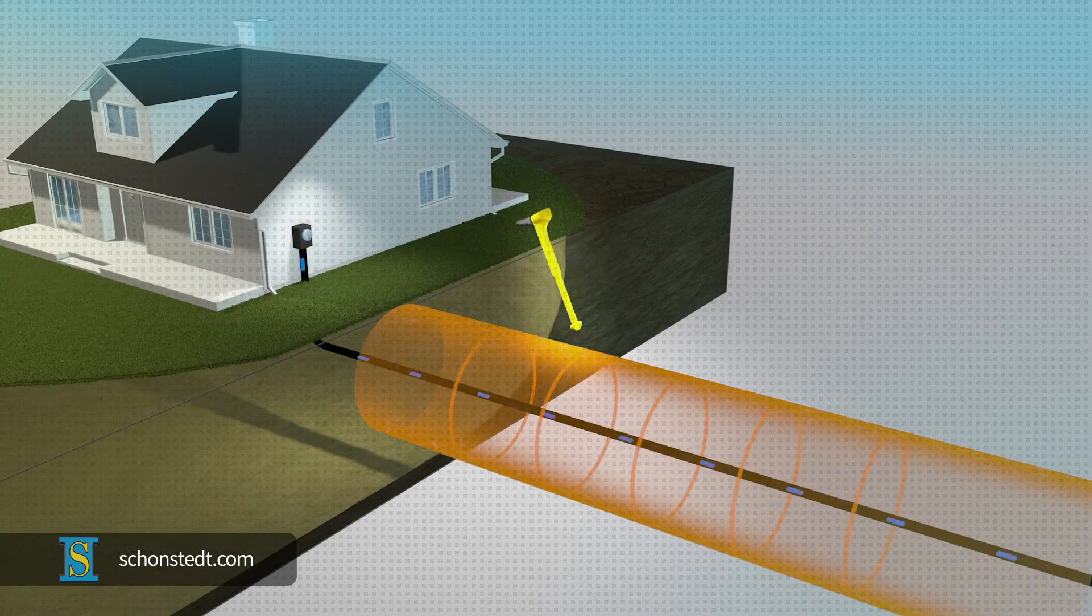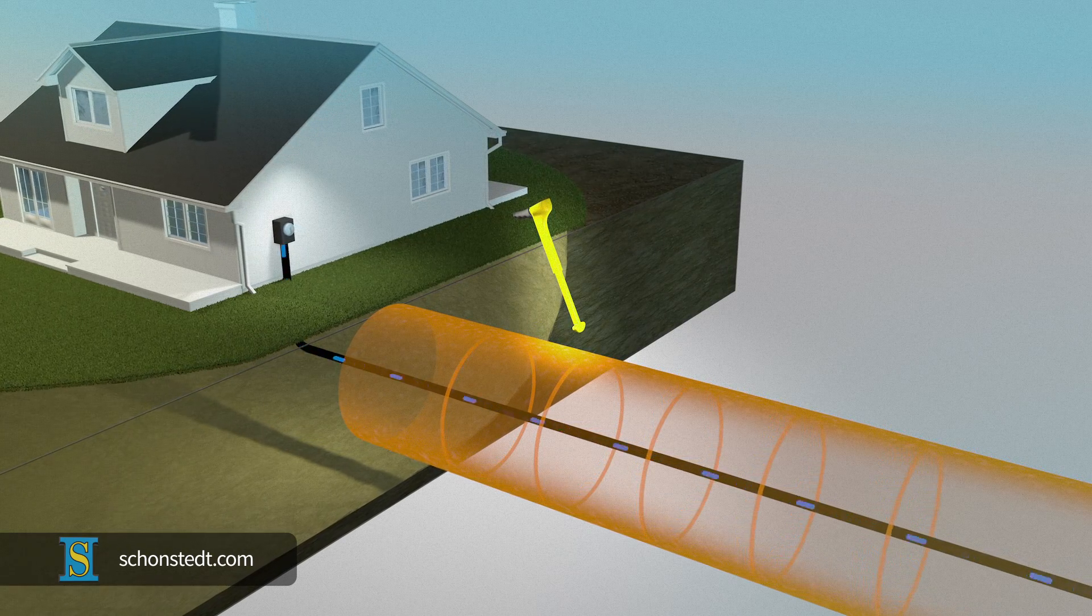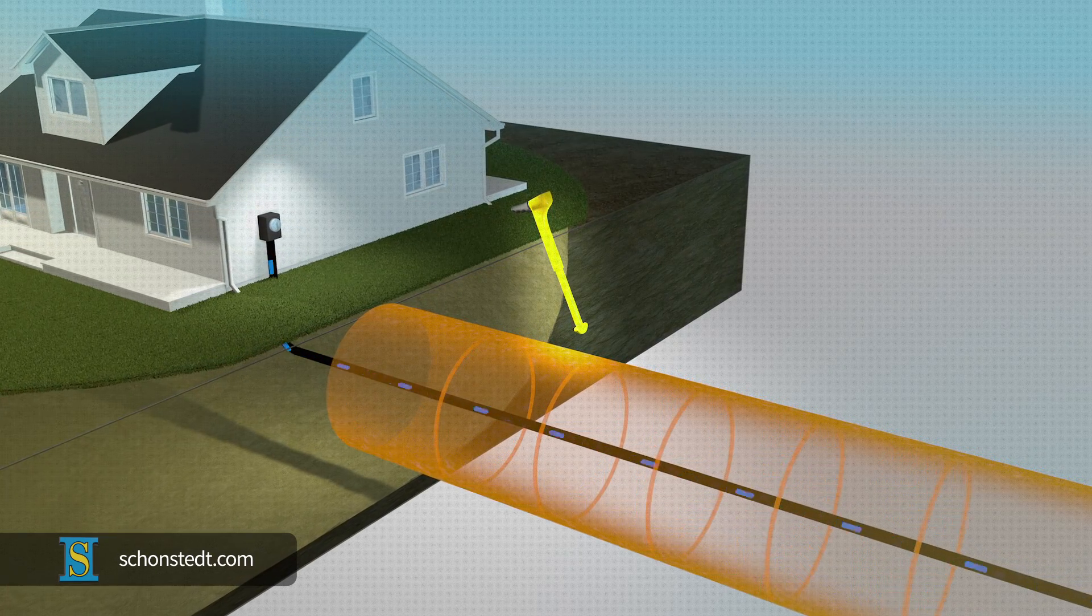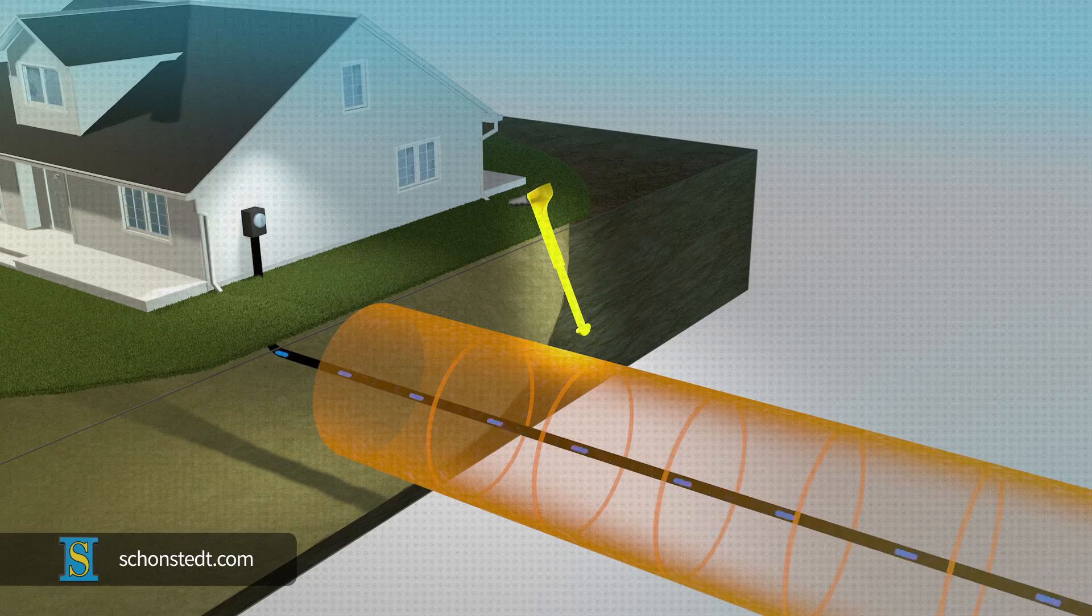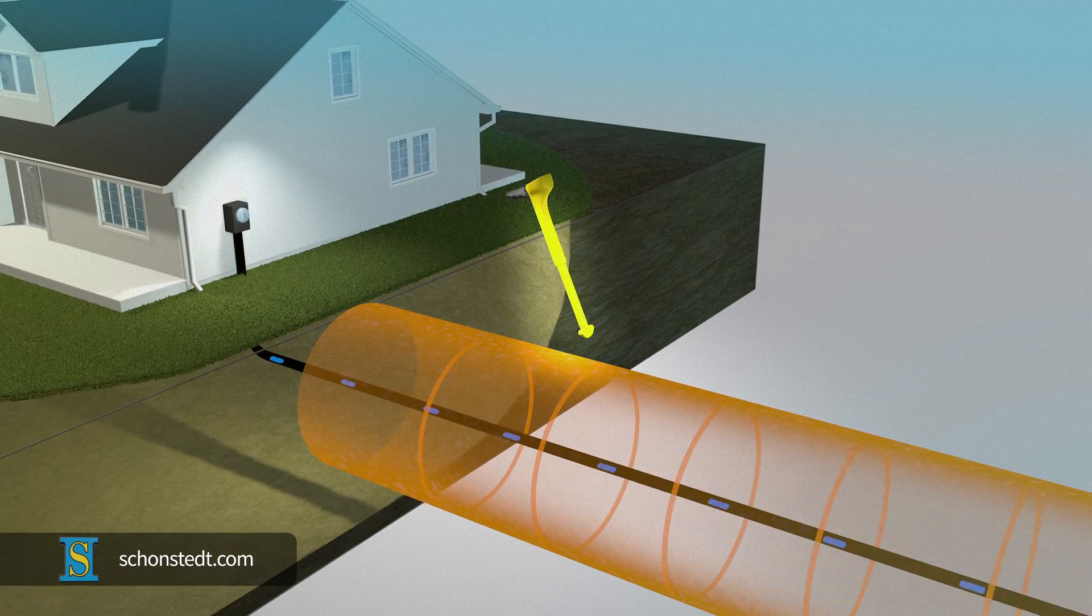The second method is known as passive locating, because the receiver detects a field created by the current that's already circulating on the cable. No transmitter is required.